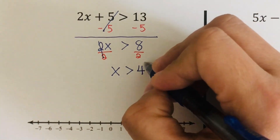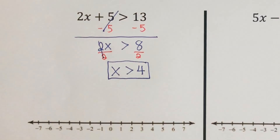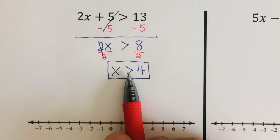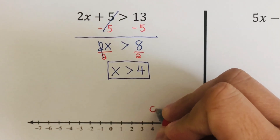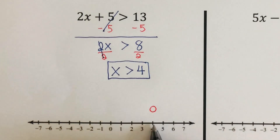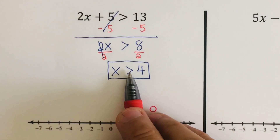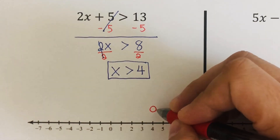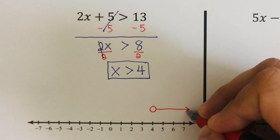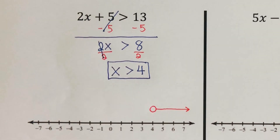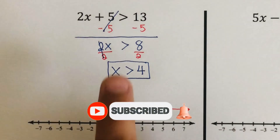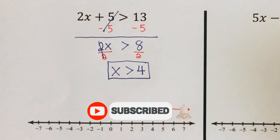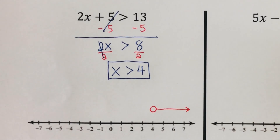This is the inequality that we are going to graph. Since there's no bar underneath, we are going to use an open circle on 4. We write that open circle on 4, and since the arrowhead is directed to the right, we draw a line directed to the right. This is the solution to this inequality — that means all numbers greater than 4 would be a solution, which means it would make this inequality correct.